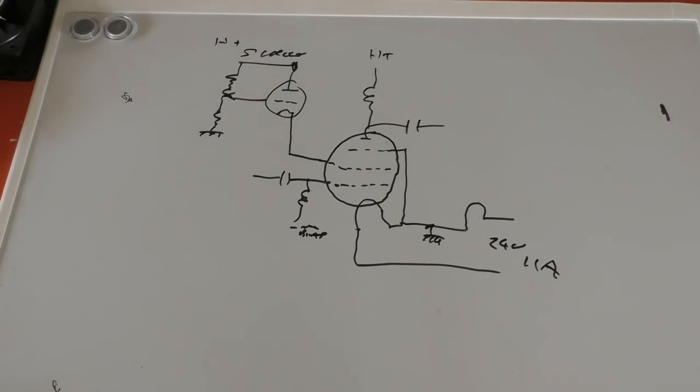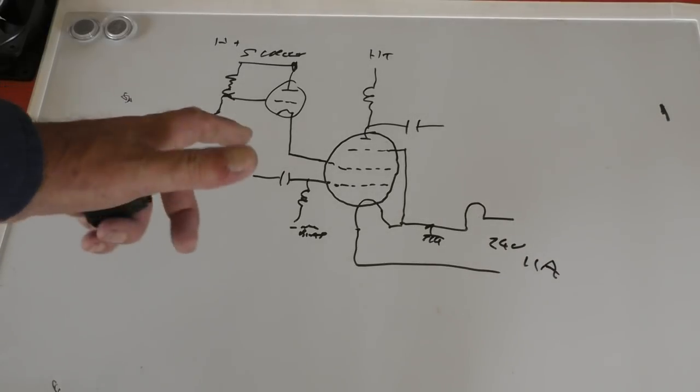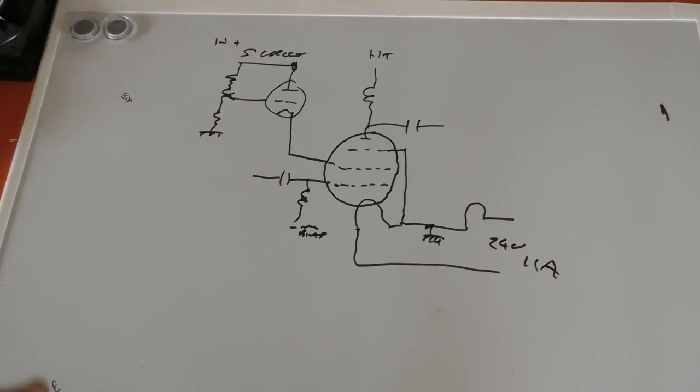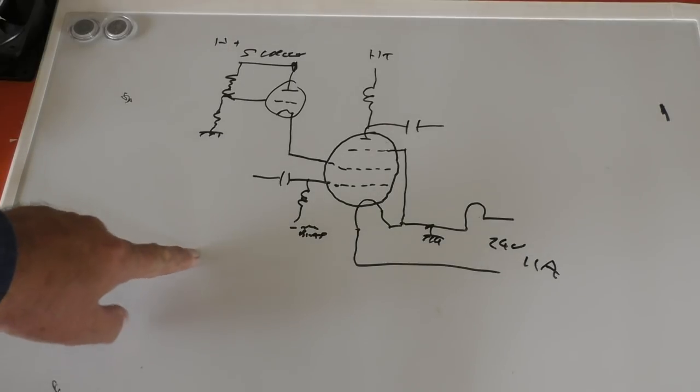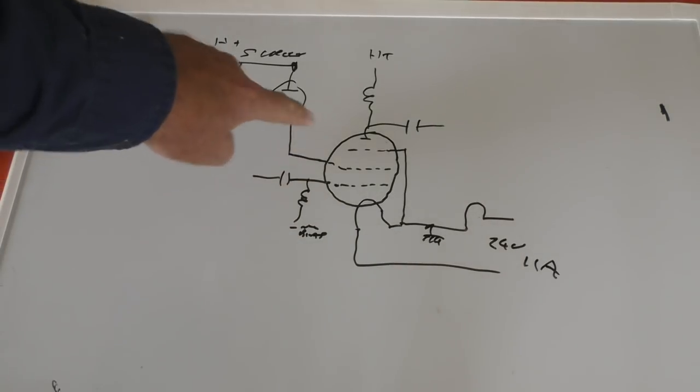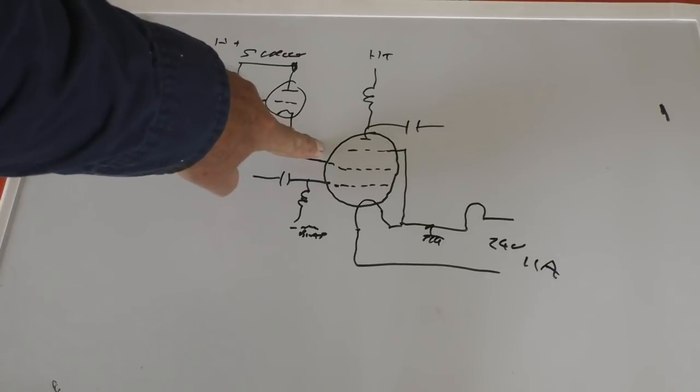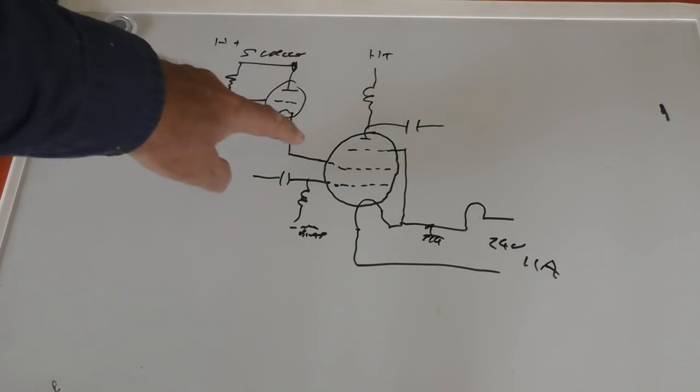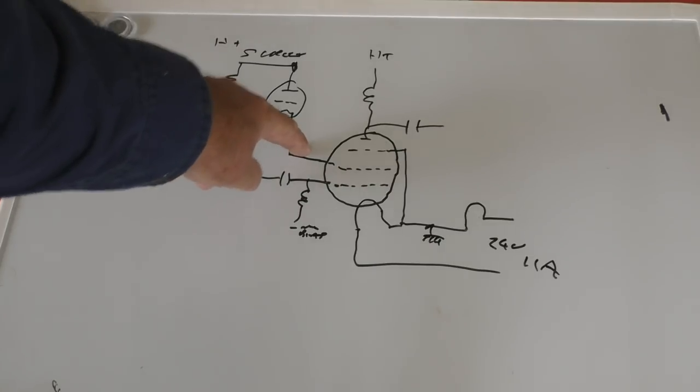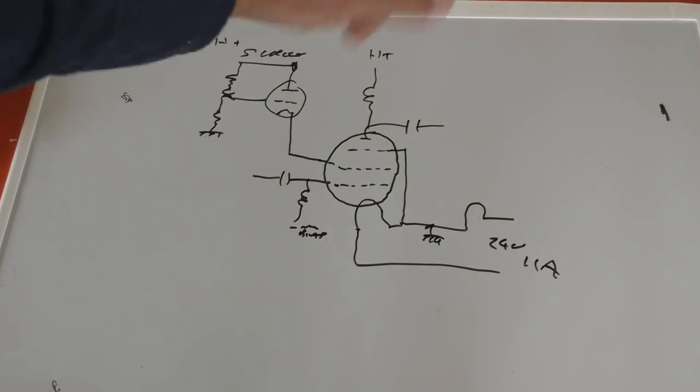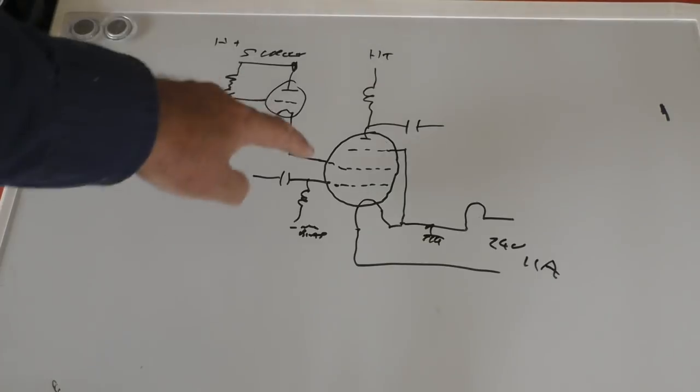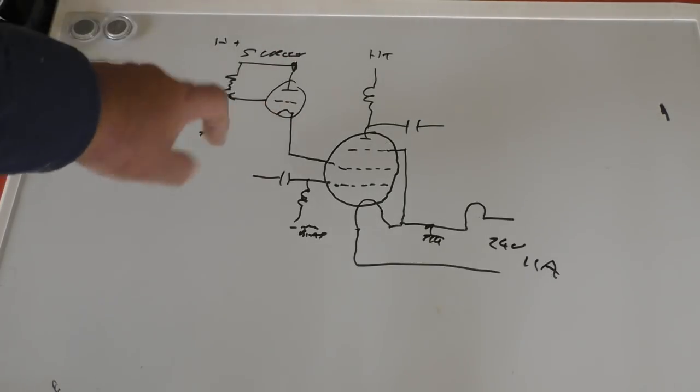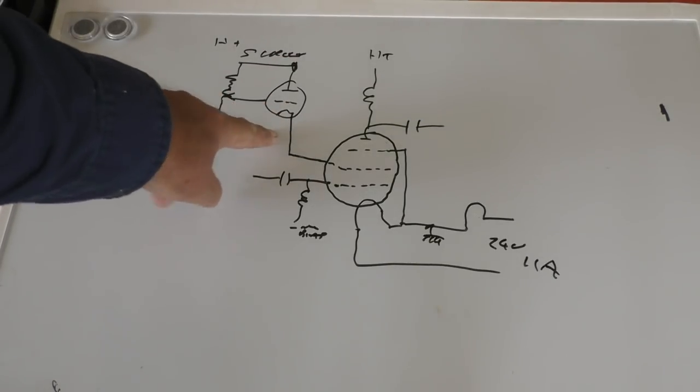And they sound quite good, screen grid mod sounds quite good, there's nothing wrong with the fidelity. Now what you've got to bear in mind is these screens are I think 800 volts at 200 milliamps. So if you're going to turn that down to 400 volts, which is what you probably have to do to get half the anode current, you're going to have 400 volts across that, 200 milliamps going through it, so it's going to be dissipating 80 watts.